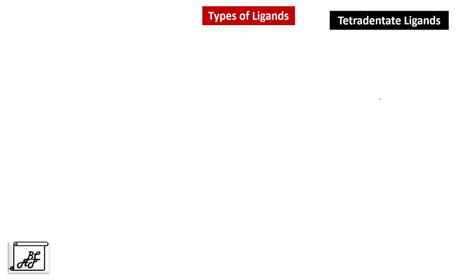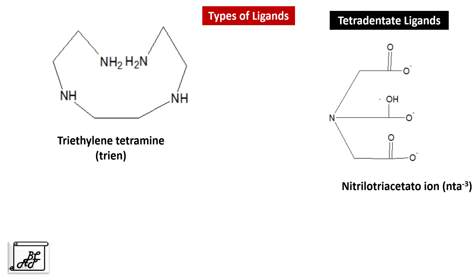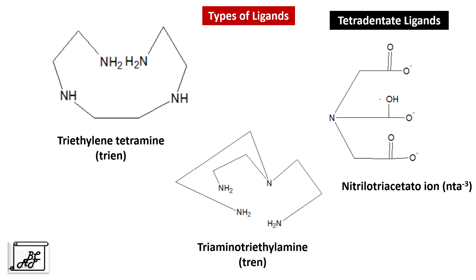Let's move to tetradentate ligands, which have four donor atoms. Examples include triethylene tetramine (abbreviated as trien), nitrilotriacetate ion, and triaminotriethylamine (also abbreviated as tren). As we move from monodentate to bidentate, tridentate, and tetradentate ligands, the number of donor atoms increases, which increases the stability of the coordination compound. A tetradentate ligand holds the central metal atom through four attachments, compared to only one for a monodentate ligand, so complex stability definitely increases.